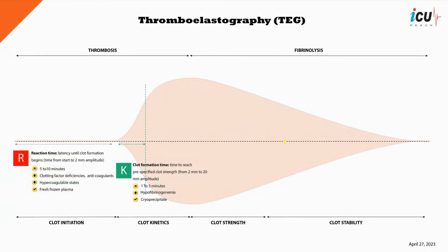The second parameter is the K-time, or the kinetical phase. This phase measures the time it takes for the clot to reach a certain level of firmness at 20 millimeters. It reflects the speed of the initial clot formation and is dependent on the accumulation and formation of fibrin links from fibrinogen. Normal value is one to three minutes. If it is prolonged, it would indicate a low level of fibrinogen and would consider transfusion of cryoprecipitate.